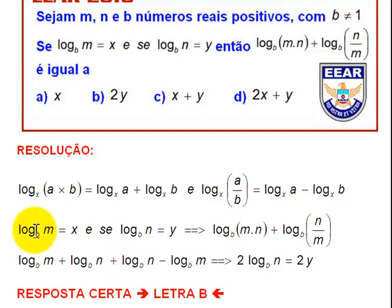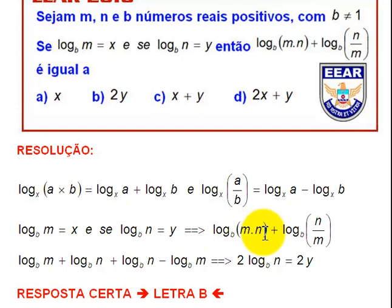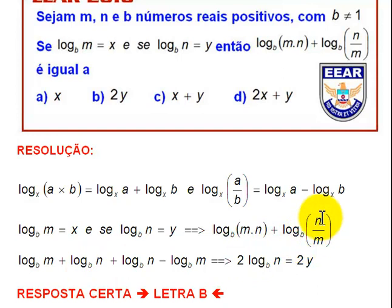O que é que eu tenho aqui? O problema diz que o log na base B de M é X e o log na base B de N é Y. Quem será o log na base B do produto MN? Será o logaritmo na base B de M mais o logaritmo na base B de N. E quem será o logaritmo na base B do quociente N sobre M? Será o logaritmo na base B de N menos o logaritmo na base B de M.